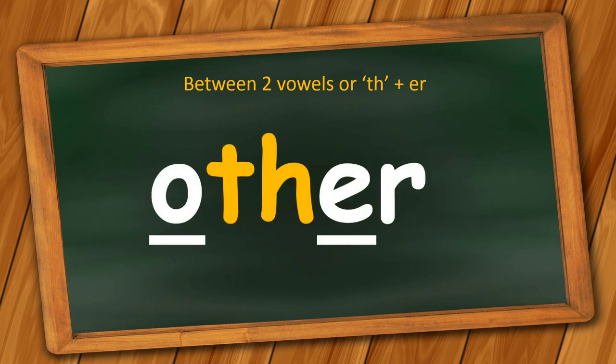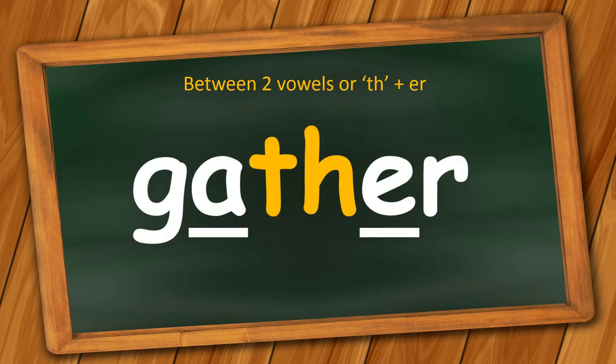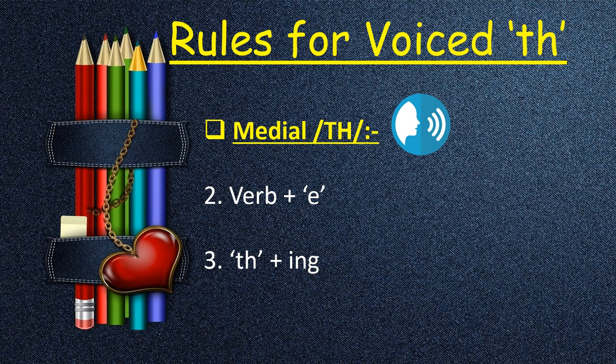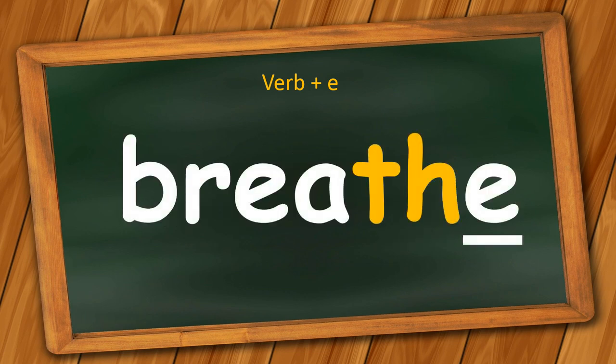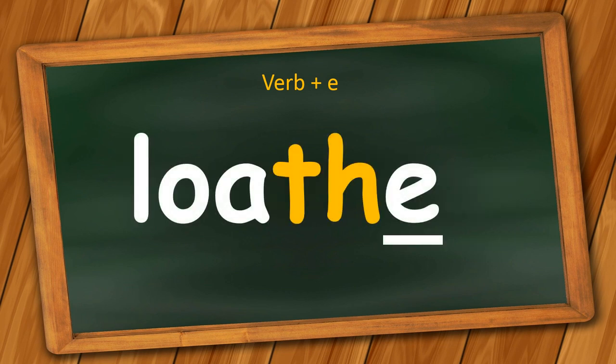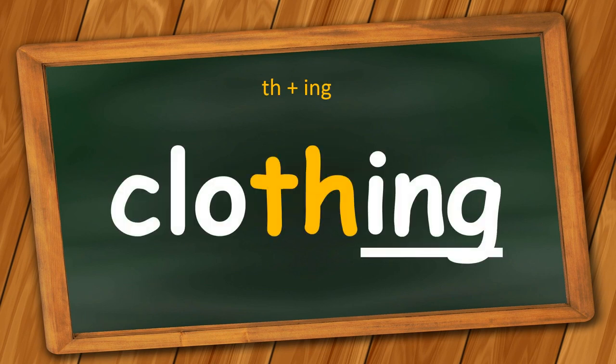More examples of medial voiced TH words: weather, other, gather. The second rule for medial voiced TH words: it is voiced when there is a verb plus E, and also when TH comes with ING words. For example, 'bathe' — 'bath' is a noun, but when it comes along with E it's 'bathe,' with the voiced TH. Also: 'breathe,' 'loathe.' TH plus ING words make the TH sound voiced — 'clothing,' 'soothing.'